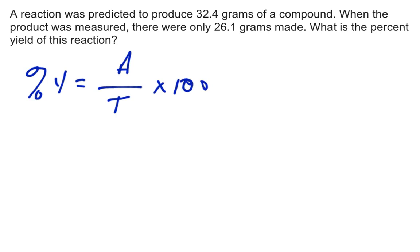Well, theoretical would go along with the word predicted. And so, that number is 32.4. 26.1 is what was actually made when the product was measured. So, this is our actual. Here's our theoretical.